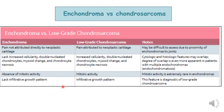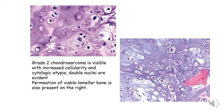In grade 2 chondrosarcoma, there is increased cellularity, binucleated cells, pleomorphic cells showing cytological atypia, and an area of myxoid matrix. A fragment of host lamellar bone surrounded completely by tumor cells is evident, confirming the infiltrative nature. Grade 2 demonstrates increased cellularity, pleomorphism, cytological atypia, double nuclei, and entrapment of viable lamellar bone.